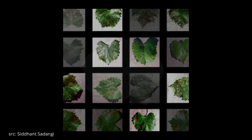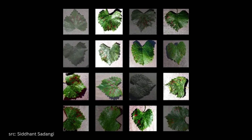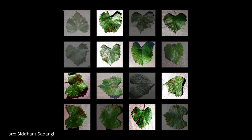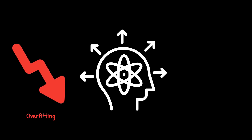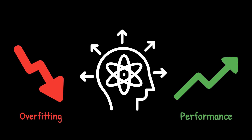Image augmentation is a technique used in computer vision to artificially increase the size of a training dataset by generating new, altered versions of existing images. This is typically done by applying a series of transformations such as rotation, scaling, flipping, cropping, or changing the brightness and contrast of the image. These modifications help the model generalize better, reducing the risk of overfitting and improving its performance on new, unseen data.